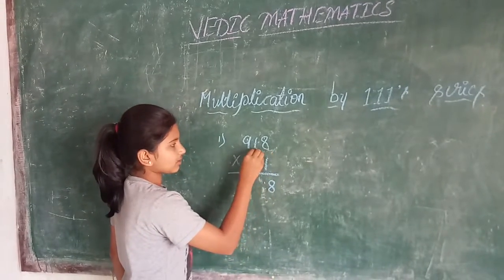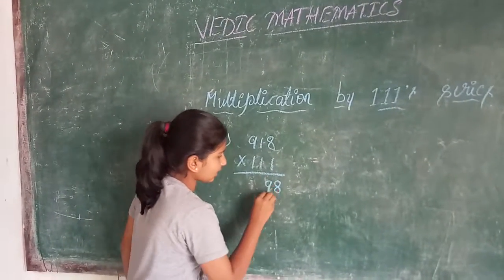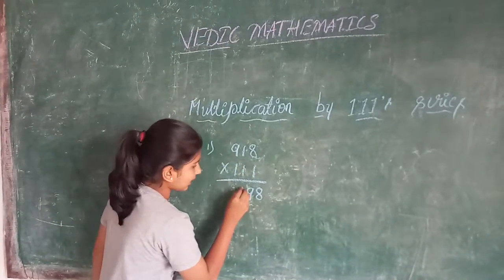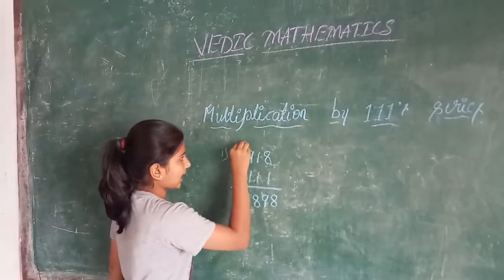Now we should add 8 plus 1. 8 plus 1 is 9. Now we should add all the 3 digits. 8 plus 1 is 9, 9 plus 9 is 18. 1 carry.